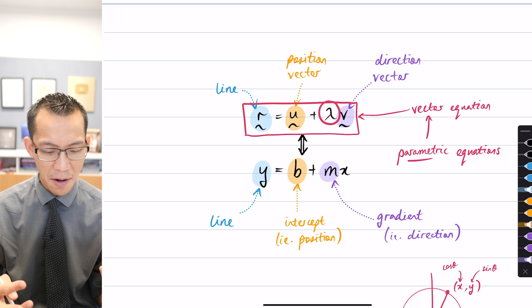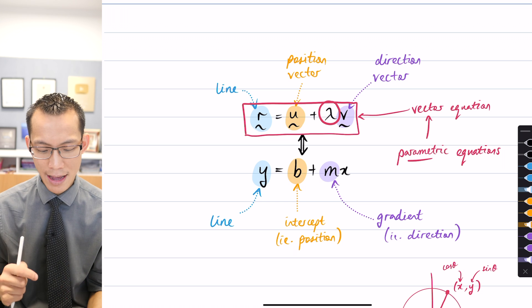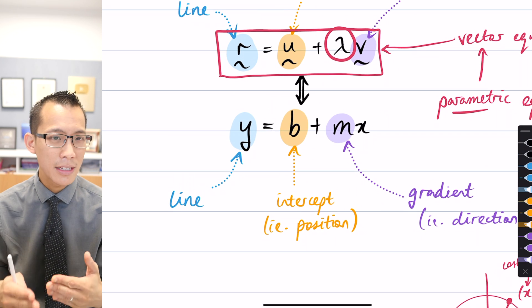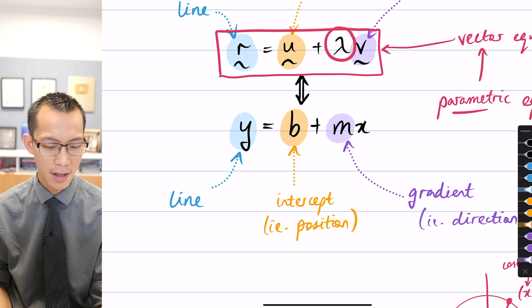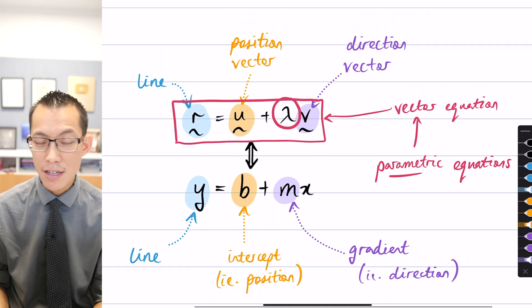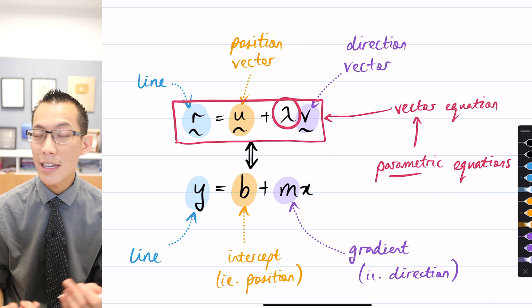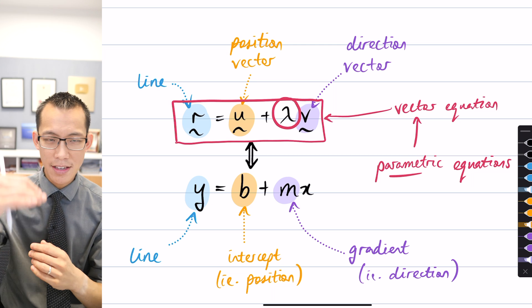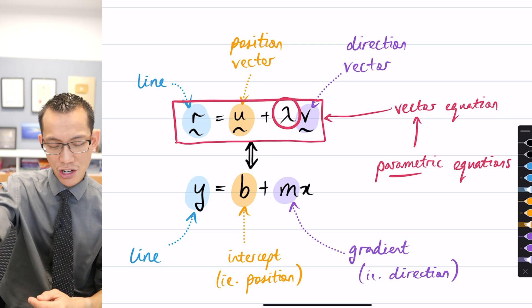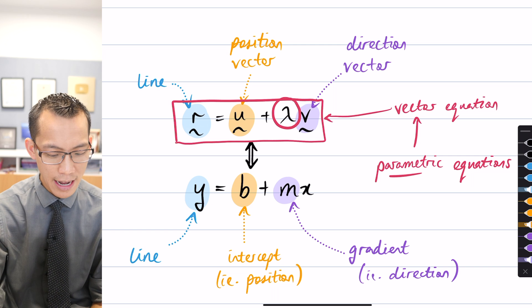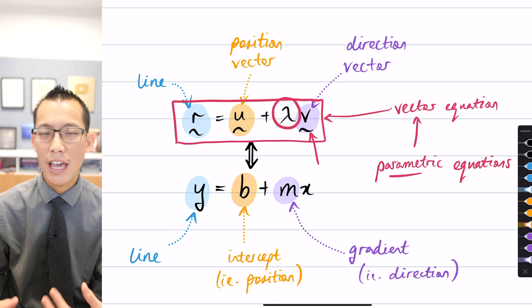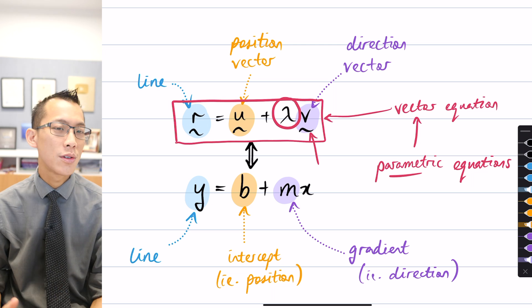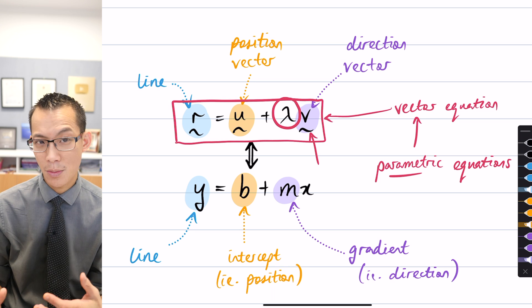This makes it different from y equals b plus mx because in that setup there's only one y-intercept. But in three dimensions, a line can have infinitely many position vectors. You can get onto the line at any point and then face in either direction and any quantity. In fact, you can have scalar multiples of v, including negative scalar multiples, and they will all give you the same line, so that was something we had to watch out for.